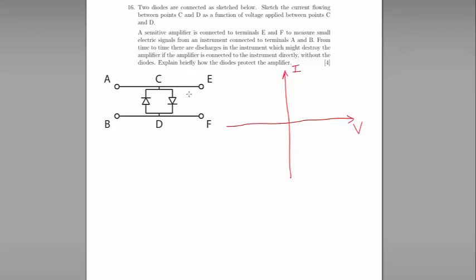So if we apply a positive voltage between C and D, the current will flow through this diode. But no current can flow through the other diodes because diodes only work in one direction.